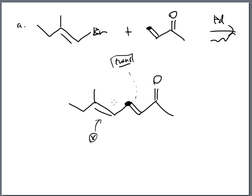Look at this double-single-double pattern — there's the delocalization network that has now been added in. This delocalization network has stabilized the product. Anytime a molecule can do this, very good. But this delocalization also goes up into that oxygen as well, so it's double-single-double-single-double going up into the oxygen. Those electrons can be spread very thin through the molecule, which makes that molecule very happy.